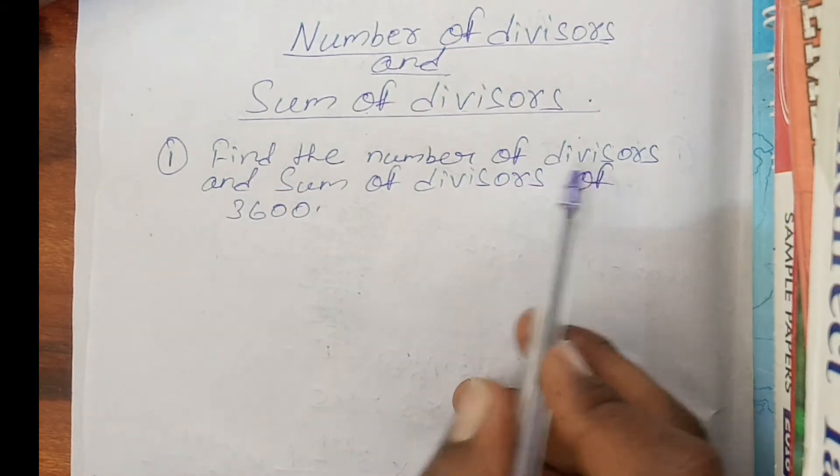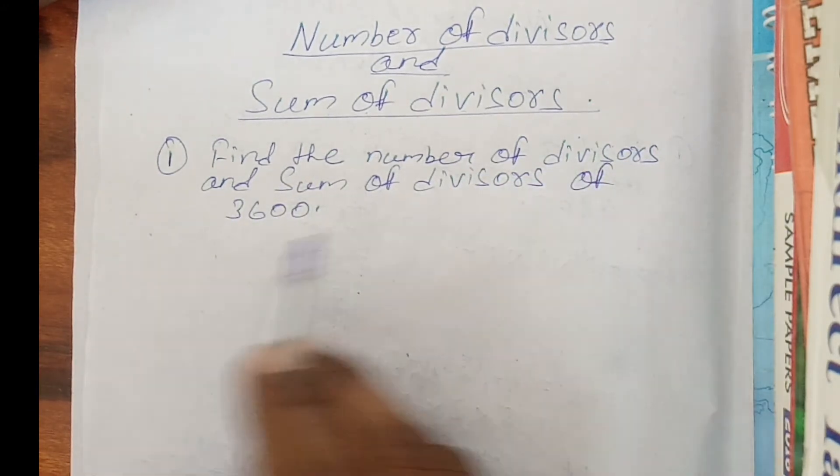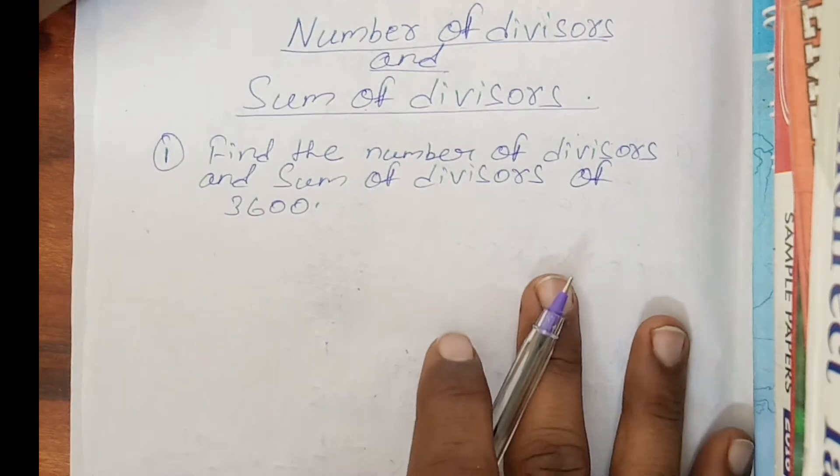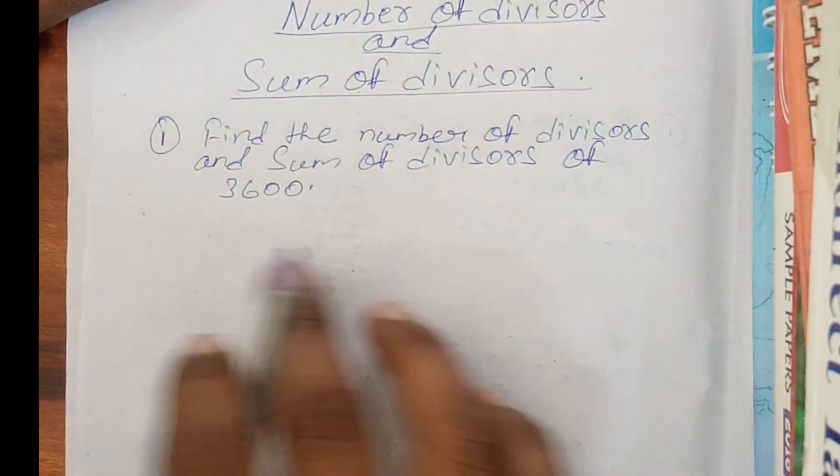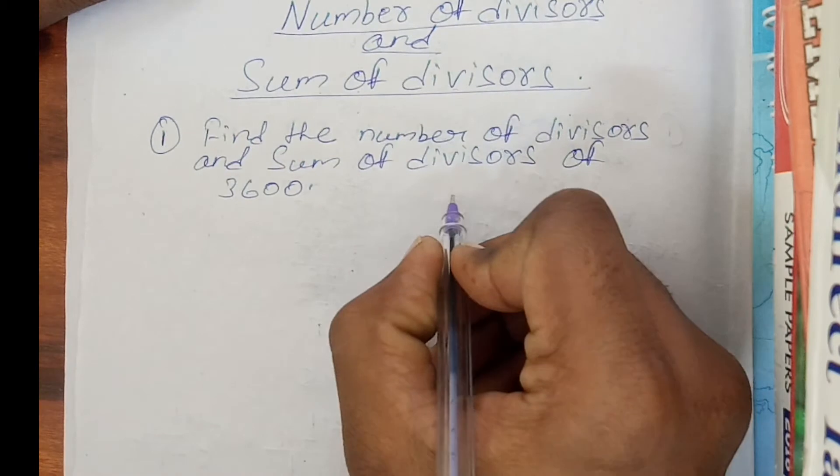Just see the question. Find the number of divisors and sum of divisors of 3600. So first we have to take out the LCM of 3600.